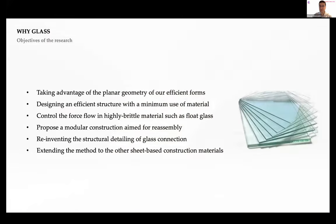Why did we choose glass? First, we wanted to take advantage of planar geometry of efficient forms because planarity simplifies many construction systems. We intended to make an efficient structure with minimum material use, control force flow in highly brittle material like float glass, and propose modular construction for assembly and disassembly. If this works with glass, the same technique can be extended to other sheet-based materials.